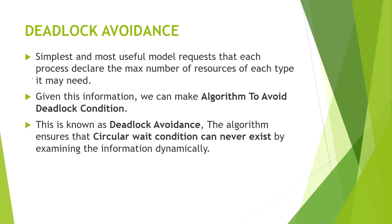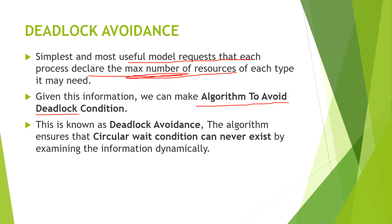The simplest and most useful model requires that each process declare the maximum number of resources it will request in the future. We have to keep account of and track those maximum number of resources. After tracking those, we have to develop an algorithm to avoid the deadlock condition.